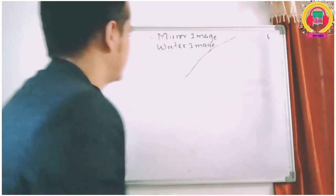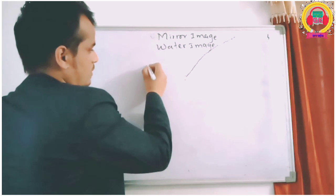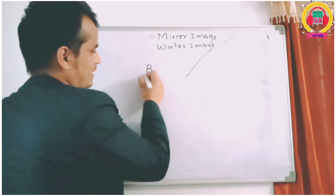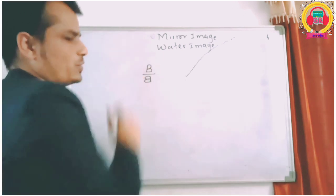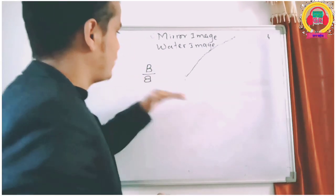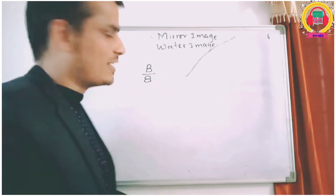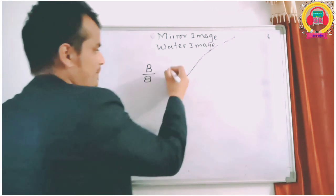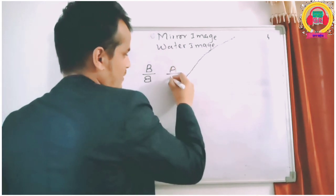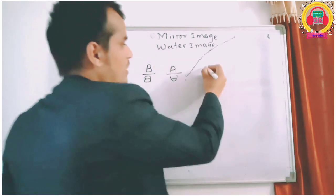This is for B, this is for B. It is for a better way, and left to right — right, this is for B. What do you do?